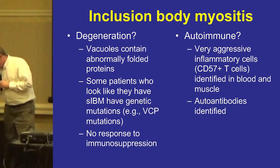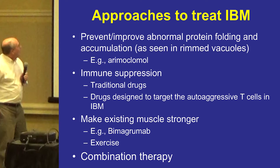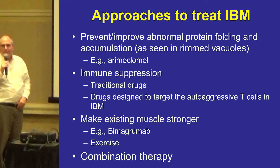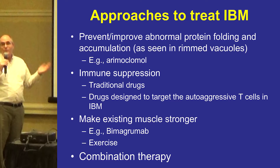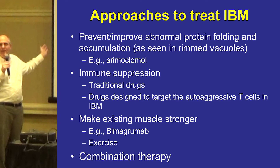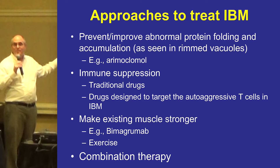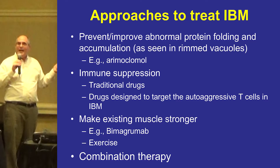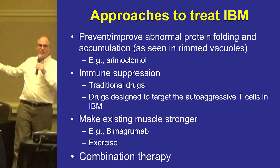Moving to the last slide on potential treatments: given evidence for both degenerative and autoimmune processes, there are several strategies. First, prevent or improve abnormal protein folding and accumulation in the muscle — prevent the process leading to rimmed vacuoles. Arimoclomol is one such drug, being developed by Mazen Dimachkie at KU. It's an incredible effort to run a trial like this — just getting the drug to the United States involved hiring consulting companies and getting paperwork exactly right to avoid customs delays. They've recently treated their first patient, which is a remarkable achievement.